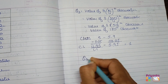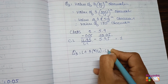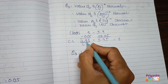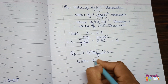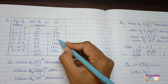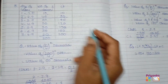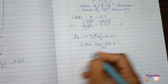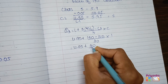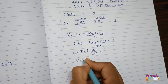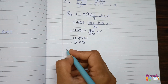Applying the Q3 formula: Q3 = L + (3n/4 − CF) / f × C = 4.95 + (150 − 120) / 30 × 1 = 4.95 + 30/30 = 4.95 + 1 = 5.95. So Q3 = 5.95. In the same way we find the median.